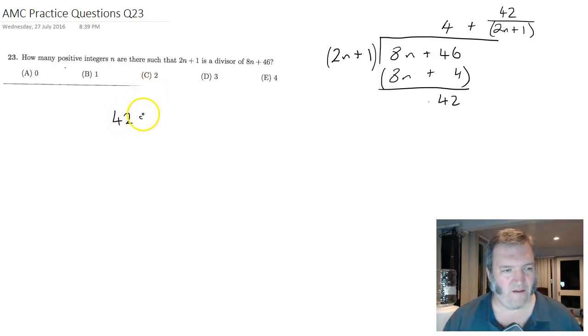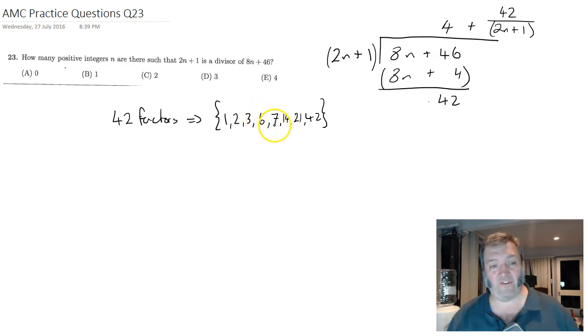Let's have a quick look at the factors of 42. Well, I've got 1 and 42. 2 would go into 42 21 times. 3 goes into 42 14 times. And 6 goes into 42 7 times.